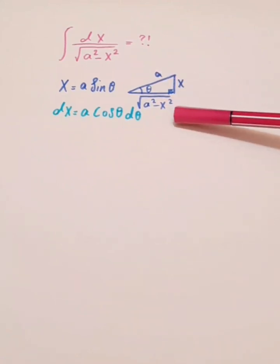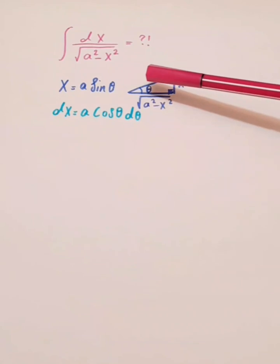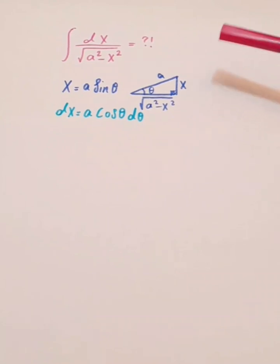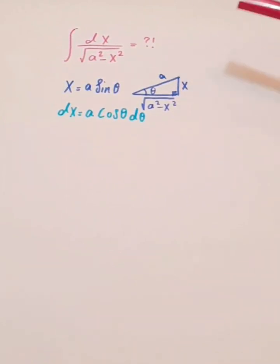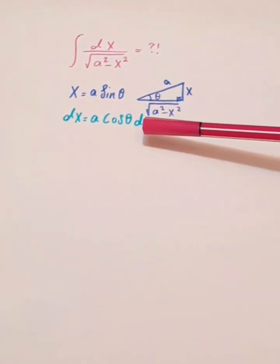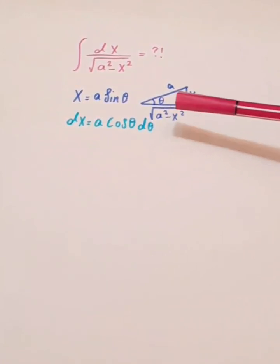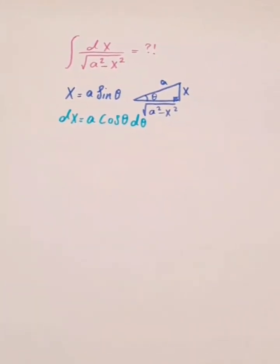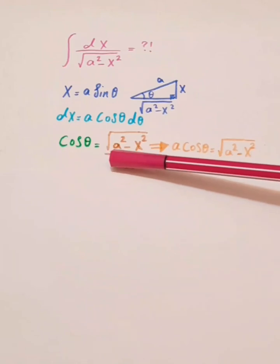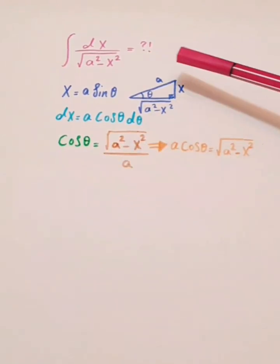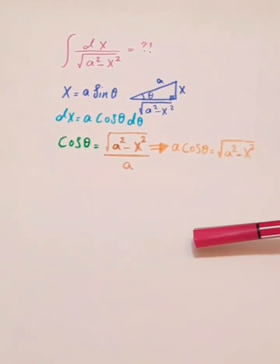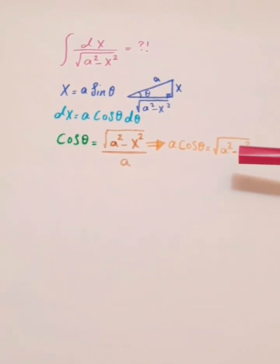We can also draw a reference triangle. With θ placed in the triangle, x/a equals sin(θ). From the triangle, the remaining side is √(a² - x²)/a, which means a·cos(θ) equals √(a² - x²).